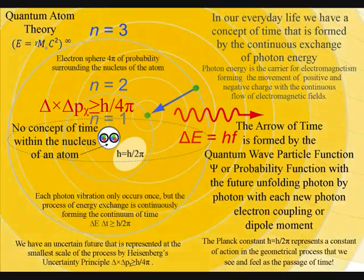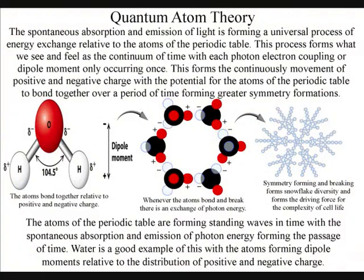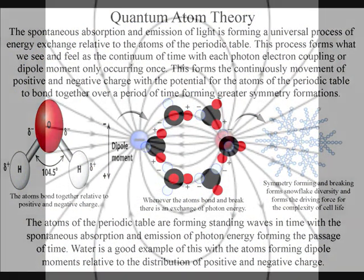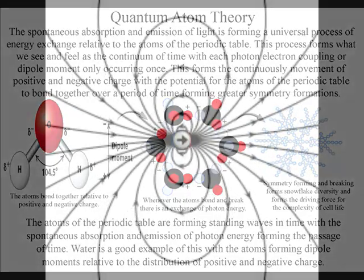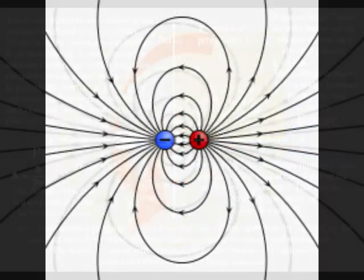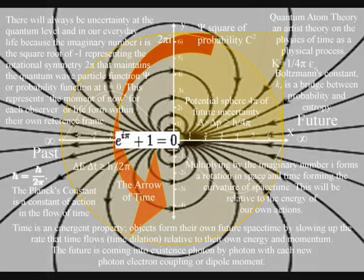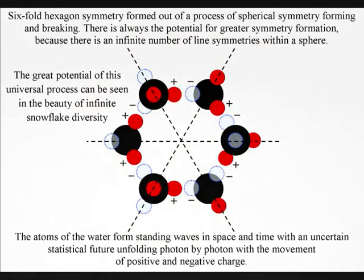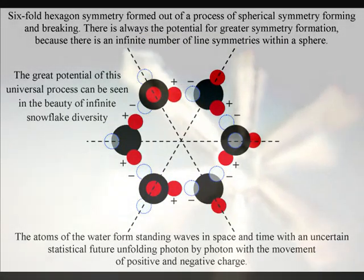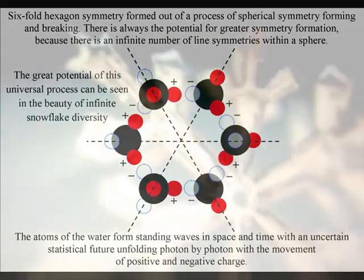In this theory, the atoms are standing waves in time, with the future unfolding photon by photon, with each new photon-electron coupling, or dipole moment. Whenever the atoms bond or break, there is an exchange of photon energy, with the future unfolding relative to the structure of the atoms.